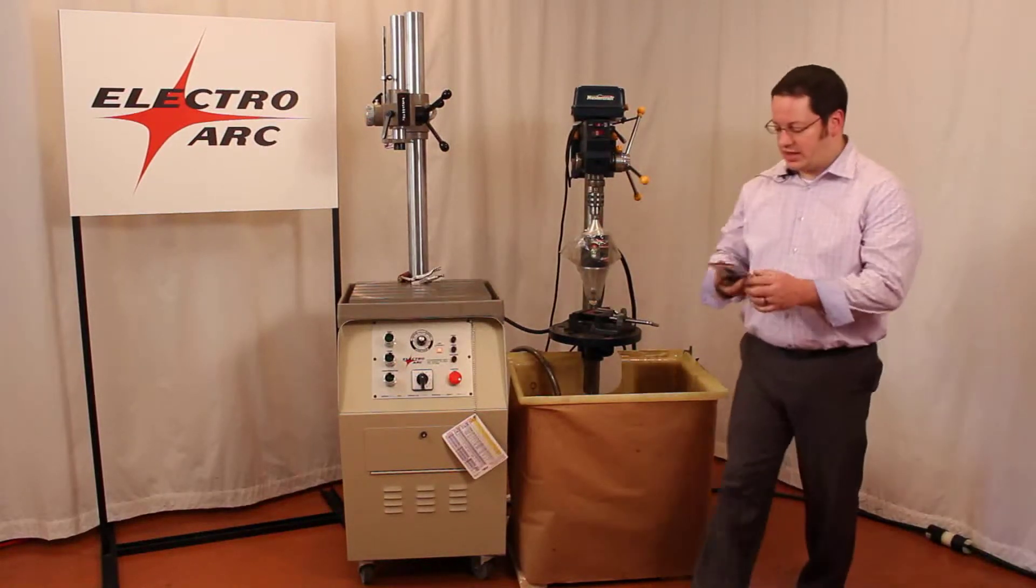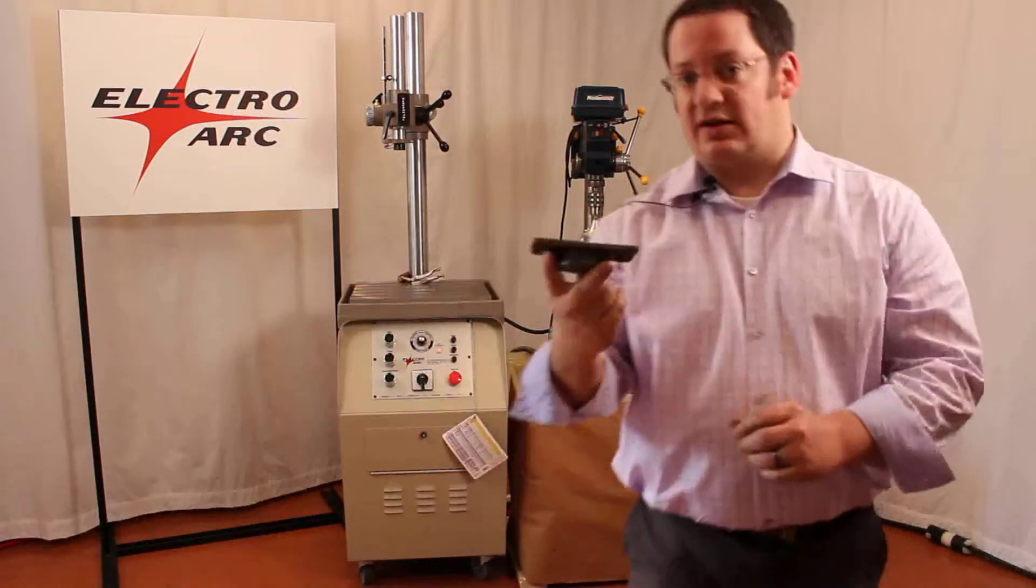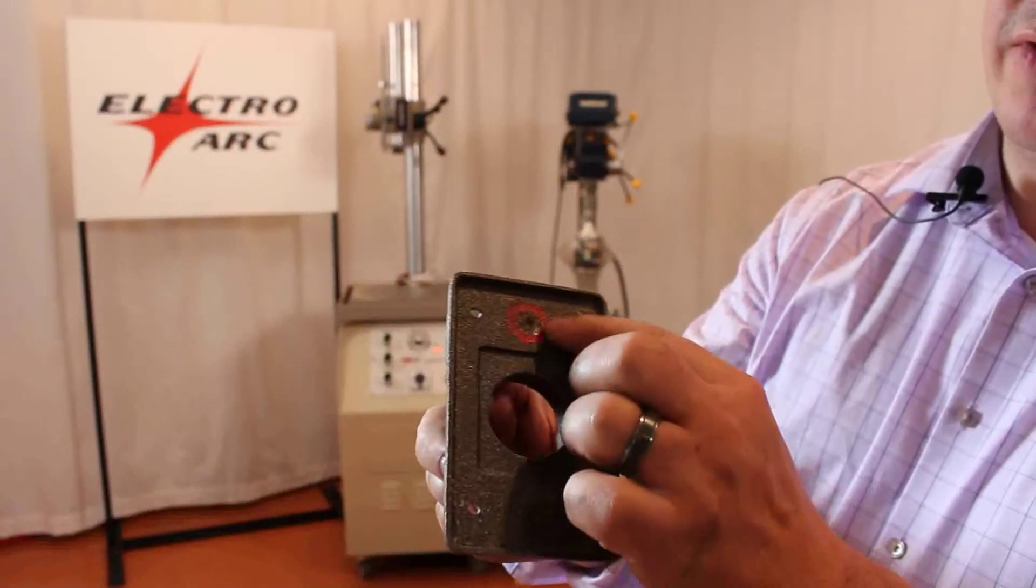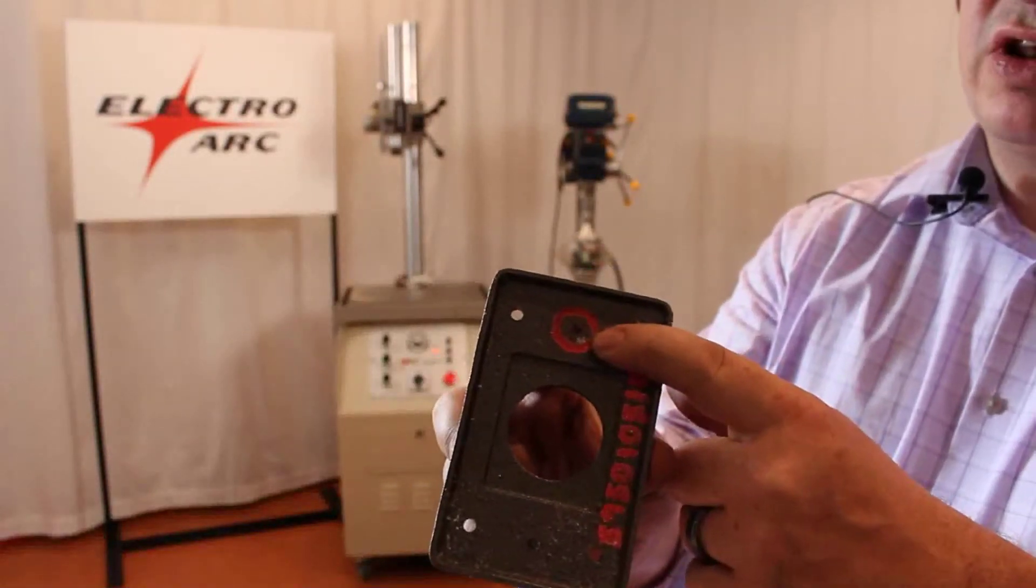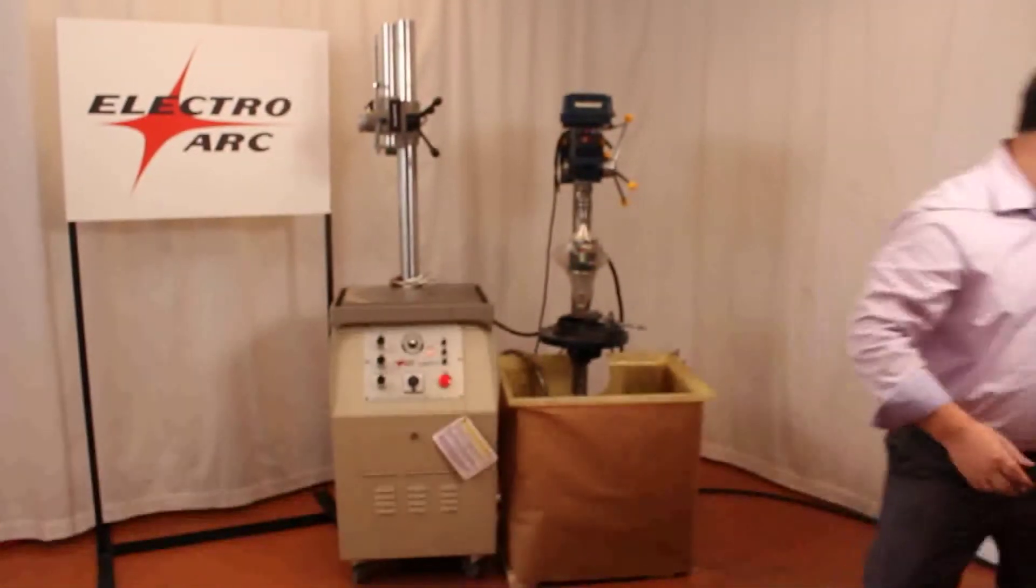What we're going to be removing today is we have an identical casting like this already set up, and all we have in there is a 440 tap and it is about a quarter of an inch in there. So we're going to go ahead and take that out.